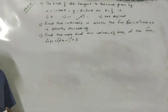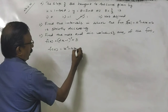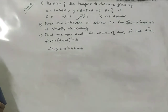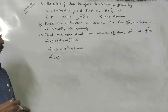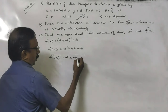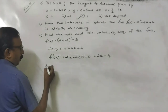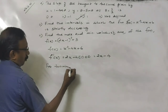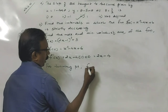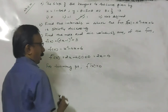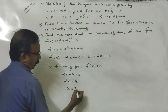Find the intervals in which the function f(x) equal to x squared minus 4x plus 6 is strictly decreasing. First, we find the derivative of this function. The derivative is 2x minus 4. For turning points, f'(x) equal to 0. Therefore, 2x minus 4 equals 0, so x equals 2.